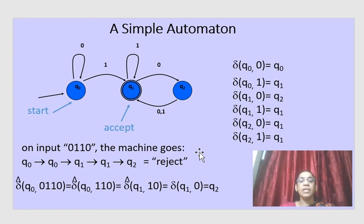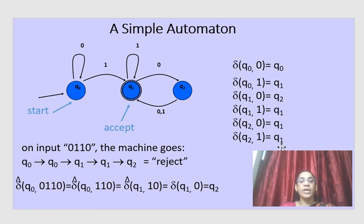Similarly, we can check whether any string is accepted by the machine using the transition function. In this video we saw the definition of finite automata and how to check whether a string is accepted or not. Thank you.